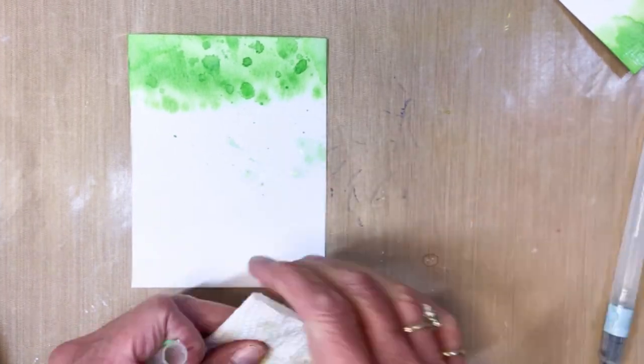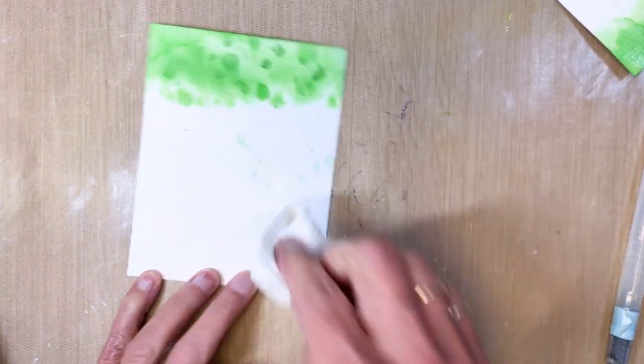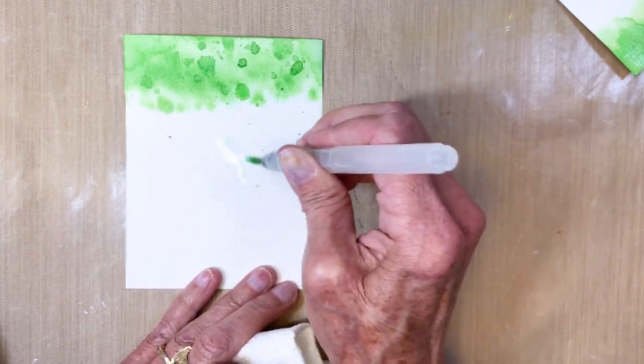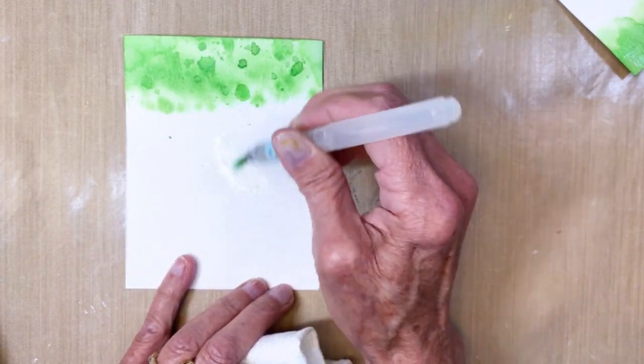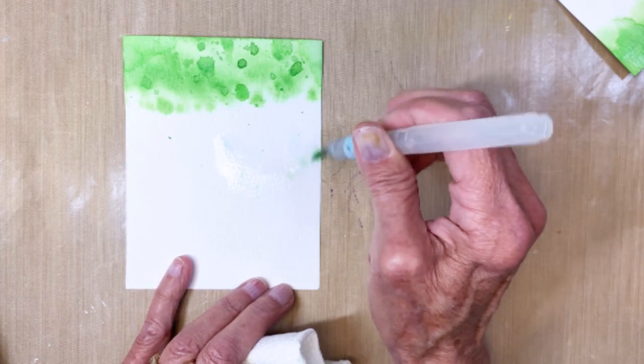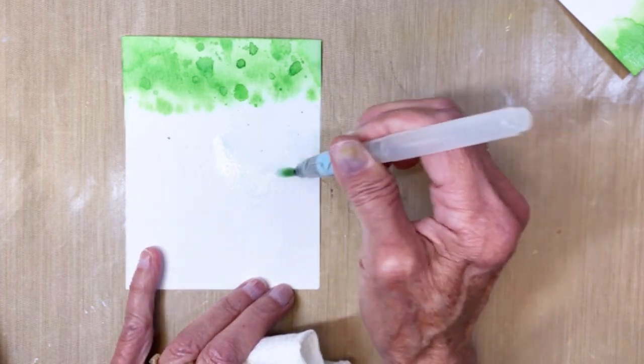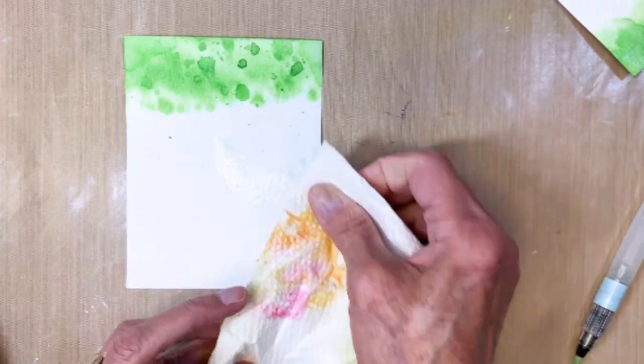So again I'm just kind of dabbing a bunch of water on and with the clean paper towel parts I am dabbing up the color to get it back off because this has to be blue like the sky is what I'm really working on.